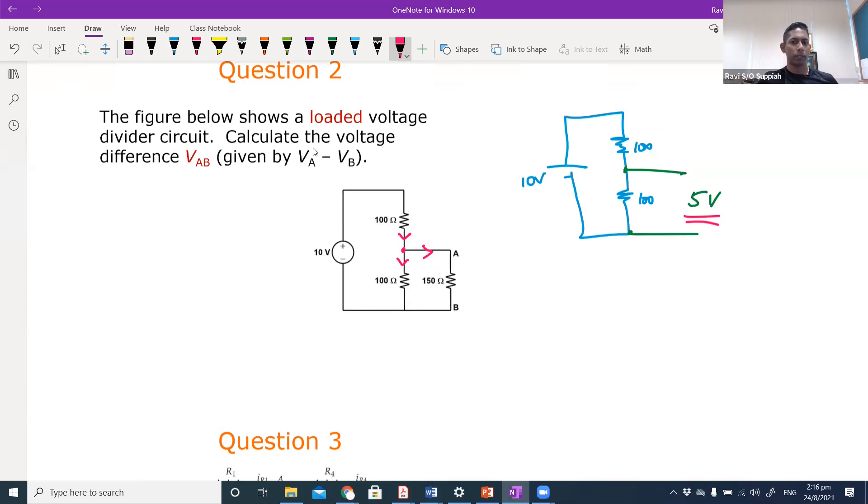So 100 and 150 are parallel, which means that when I combine 100 with 150, 100 parallel with 150, I'll get 60. So this effective resistance over here will now be 60 ohm.